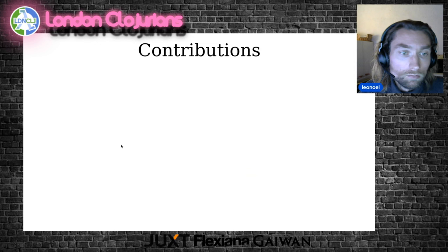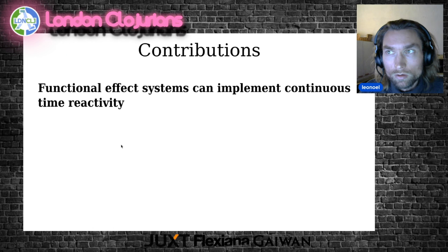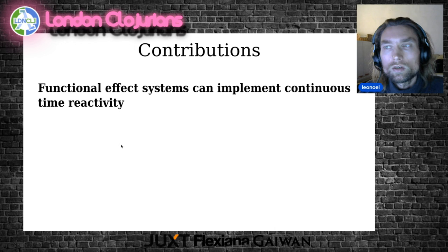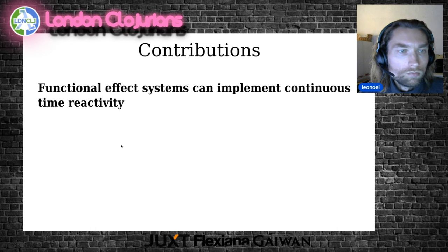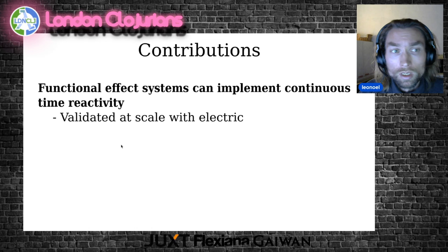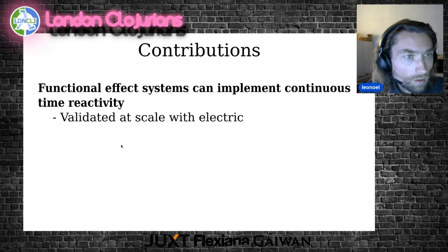So that's a successful experiment. What this proves is it's possible for functional effect systems to implement continuous time reactivity. The way we achieve that is by giving synchronicity semantics and a bidirectional interprocess communication that allows informing about invalidated state without actually computing the value. We've been validating that model at scale with Electric Closure, working on it for more than two years and using it for serious business applications. This algorithm just works — we experience really no problem with it. So that's a huge success.